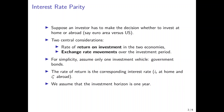If we assume for simplicity that there is only one investment vehicle and this is government bonds, then the rate of return would be the corresponding interest rates, typically denoted by i_t at home and i_t* abroad. For this analysis, we assume that the investment horizon is one year.